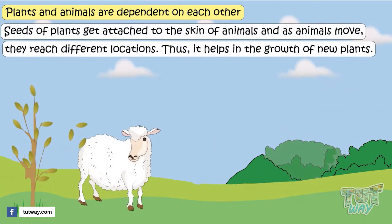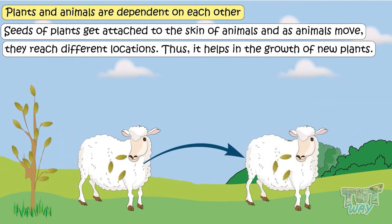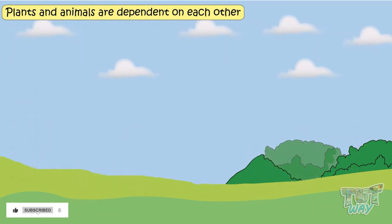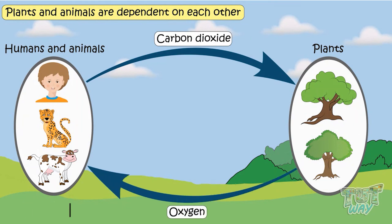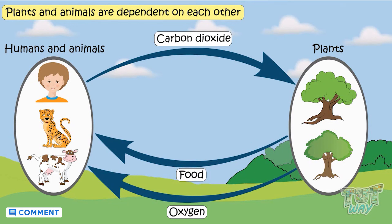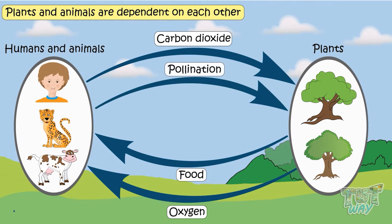Also, seeds of plants can get attached to the skin of animals, and as these animals move, seeds reach different locations, helping in the growth of new plants. So animals provide carbon dioxide to plants, plants provide oxygen and food to animals, and animals help to grow more plants.